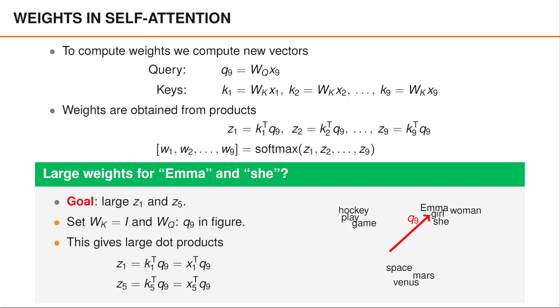In that case, the keys for Emma and She would still be close together. To make Z1 and Z5 large, we can then select WQ to be some matrix that maps the word embedding